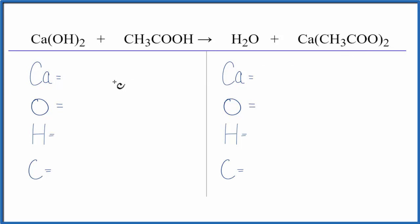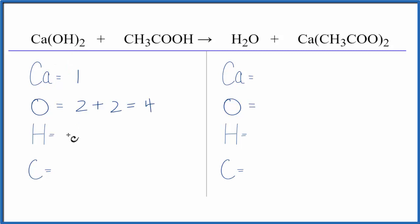Let's count the atoms up. One calcium. Two times the one gives two oxygens, plus we have one, two more here, so we have four oxygen atoms. Hydrogens: two times the one, plus three, plus one — that equals six hydrogens. And carbons we have one, two.